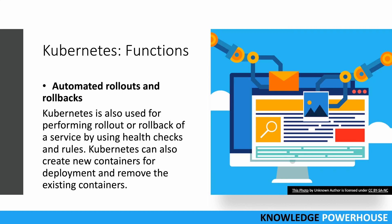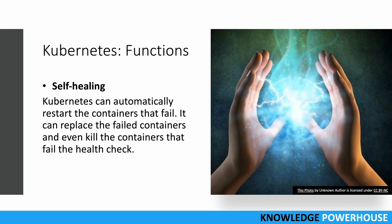Fourth, automated rollouts and rollbacks - when deploying, Kubernetes can roll out new features to production, perform health checks, and roll back if there's an issue. It can create new containers to scale up the cluster, and remove unused containers when scaling down.